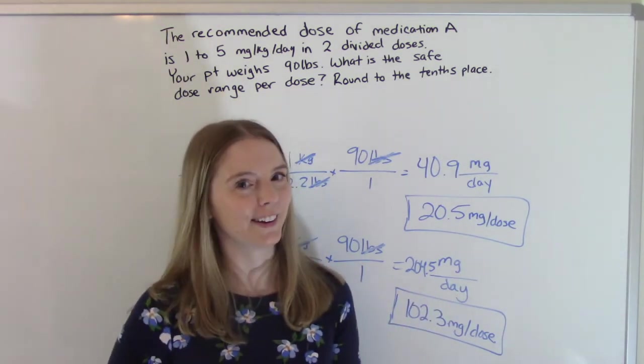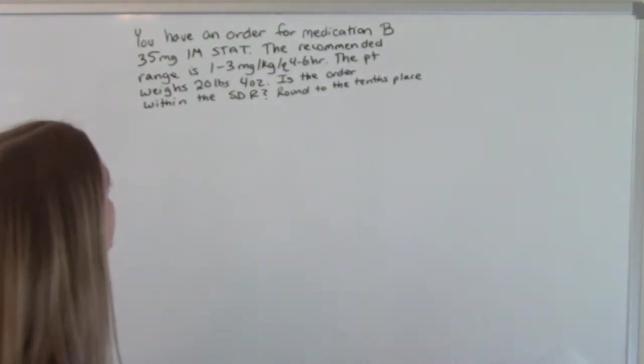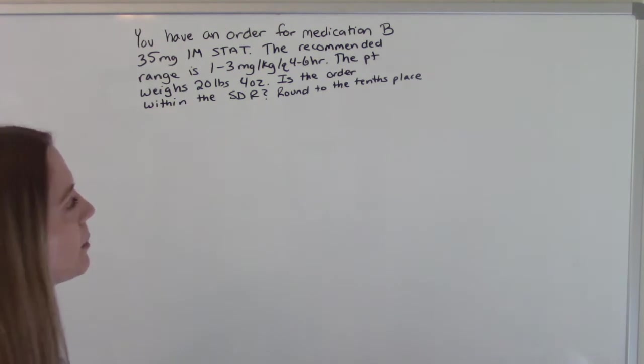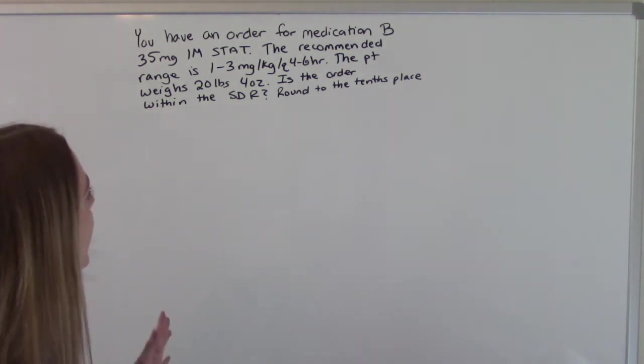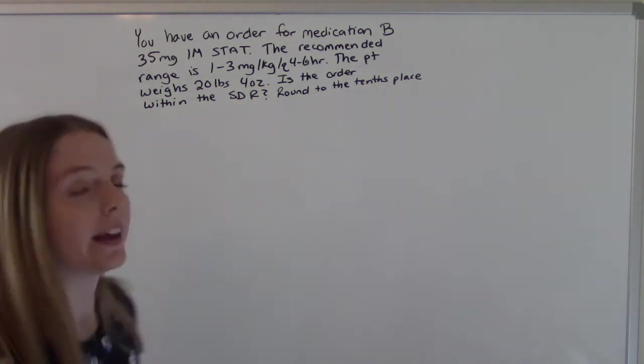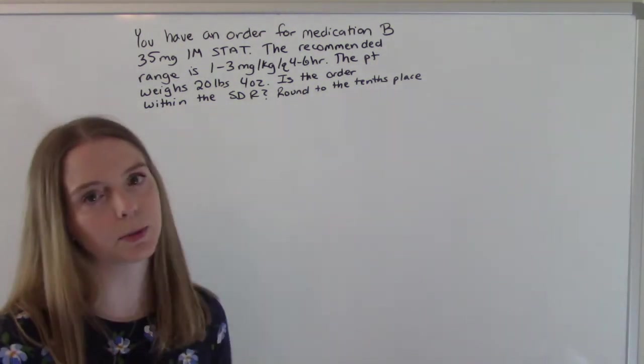Let's do another one. So we have an order for medication B, 35 milligrams IM STAT. The recommended range is one to three milligrams per kilogram Q four to six hours. The patient weighs 20 pounds, four ounces. So we want to know, is the order within the safe dose range? And they're telling us to round to the tenths place when we do it.